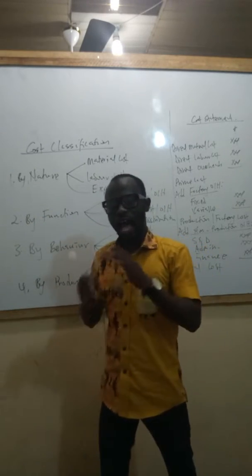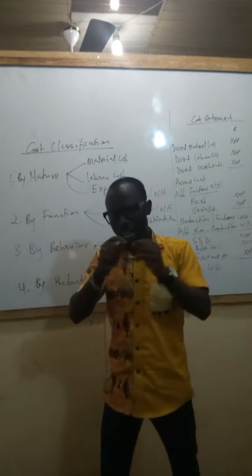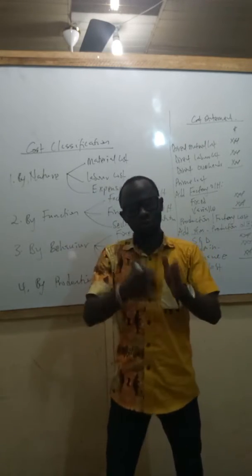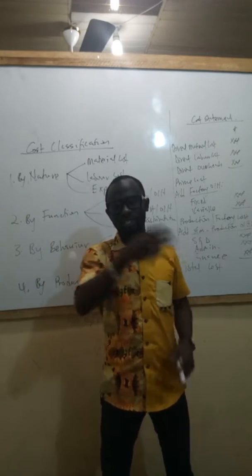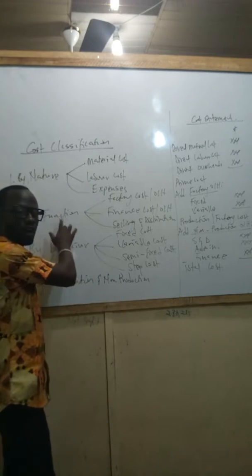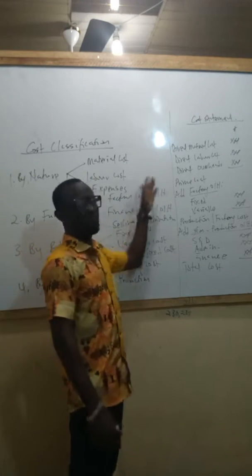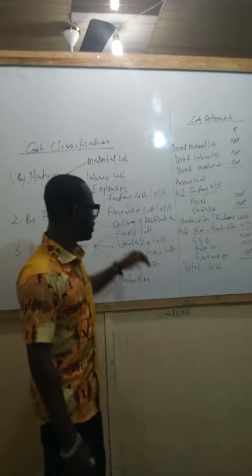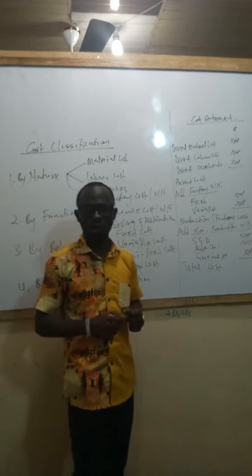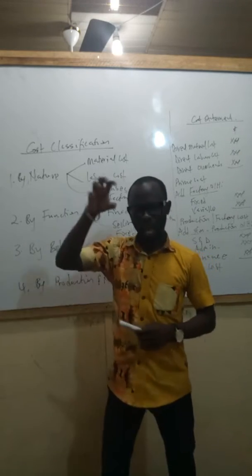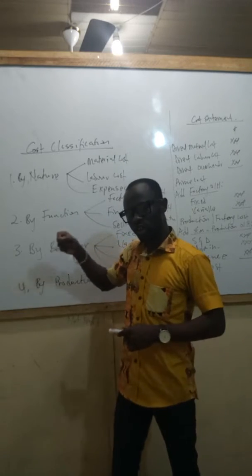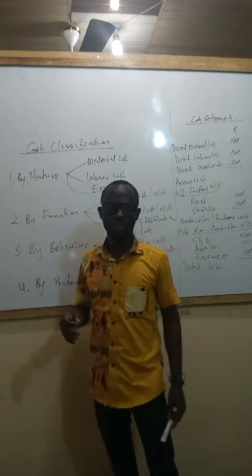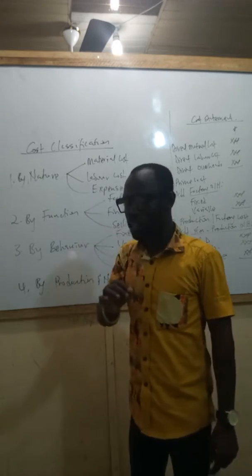Classification of cost according to function is where cost is classified according to the various activities — or various departments — undertaken within the organization. Under this classification, we have factory or production cost, which could be factory or production overheads. Then we could have finance cost or finance overheads, selling and distribution overheads, and administration overheads. So we are classifying cost according to the various departments, activities, and functions of the organization.